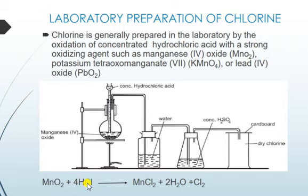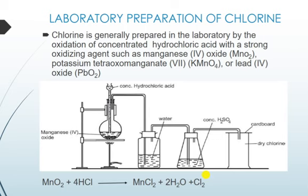This is the equation for the reaction: the oxidation of hydrochloric acid with manganese dioxide as the strong oxidizing agent. Manganese dioxide reacts with hydrochloric acid to give manganese chloride, water, and chlorine gas, which is our main product.